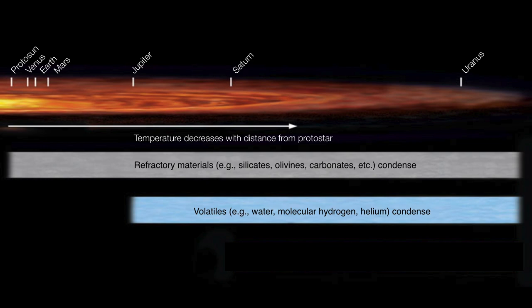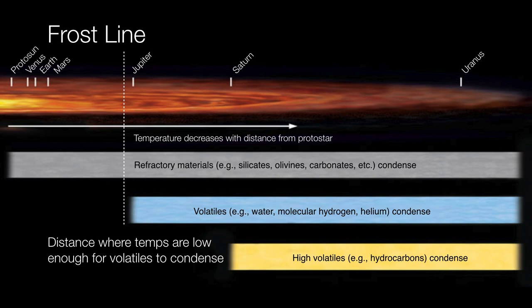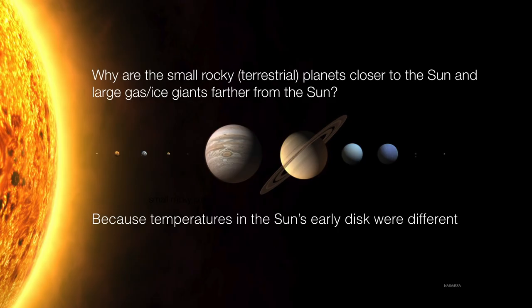They become solid enough or at least slushy enough in order to fully condense. And in fact, once you get out past the orbit of Saturn, the temperatures are low enough to even allow high volatiles such as hydrocarbons, methane, ammonia, and so forth, they can even start to condense. So the point where the temperatures drop low enough is called the frost line. It's really just the distance where the temperatures are low enough for volatiles to condense.